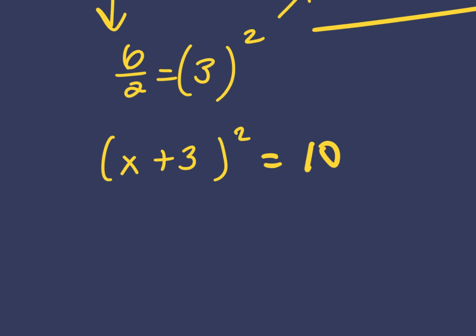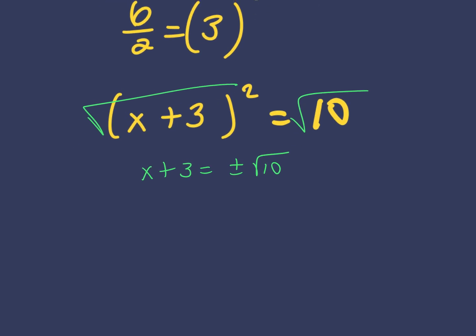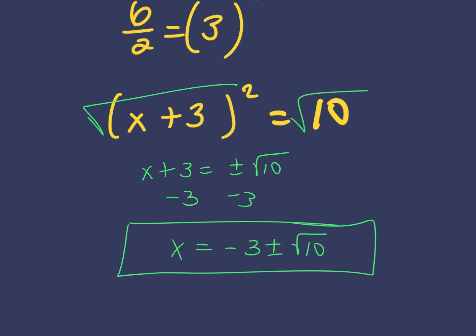Now square 3 — what is 3 squared? 9. What goes in that square goes in the other one too. So 1 plus 9 is 10. Here's a problem we did on Friday — a binomial squared equals a number. Take the square root of both sides; what goes in front of your answer? Plus or minus. Don't forget that. Then subtract 3 to get x by itself. So x equals negative 3 plus or minus the square root of 10. Can I break down the square root of 10? No. There you go.